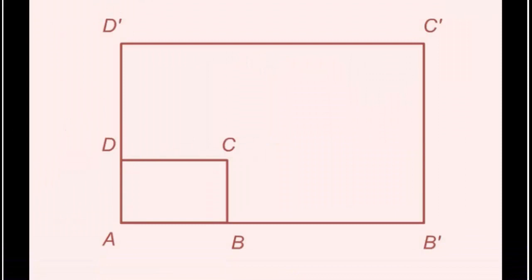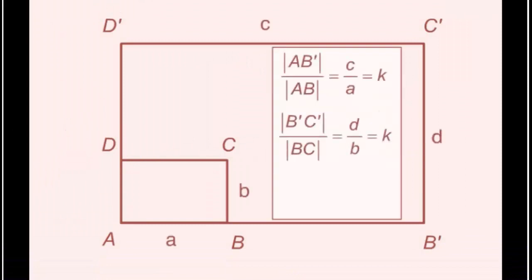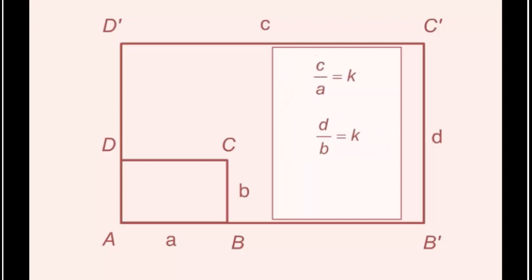Прямоугольник ABCD подобен прямоугольнику AB'C'D', потому что соответствующие стороны этих прямоугольников пропорциональны. Соотношения равны друг другу.